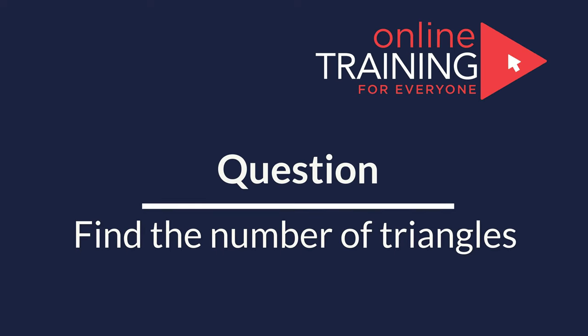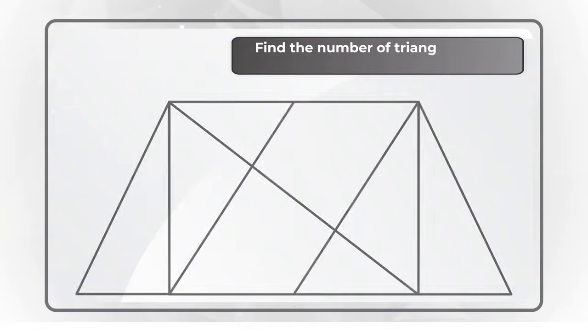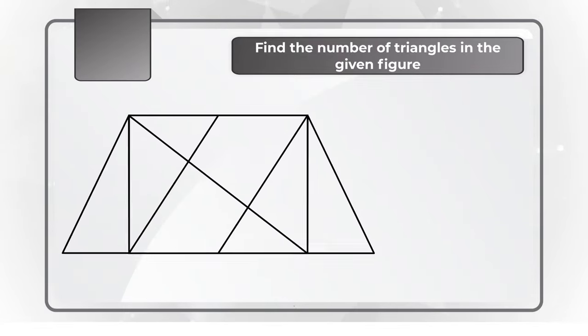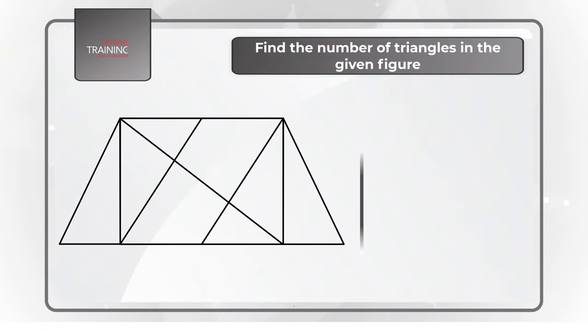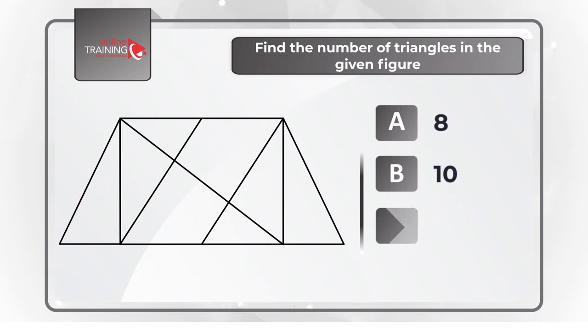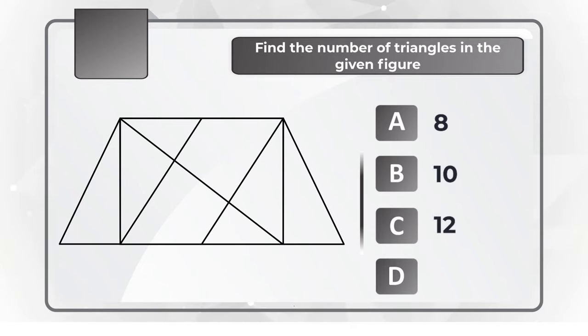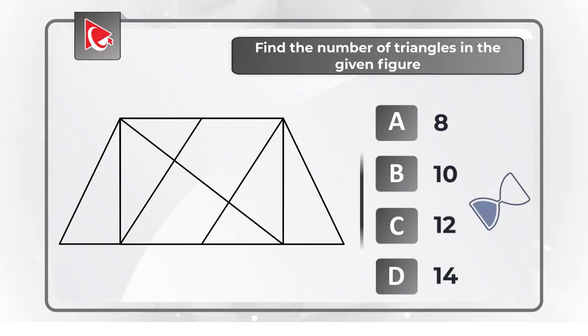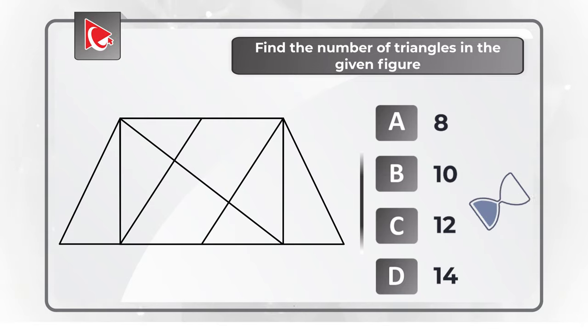Here is a question for you to try your skills. You need to determine how many triangles are shown on the screen. You have four different choices: Choice A, 8; Choice B, 10; Choice C, 12; and Choice D, 14. Feel free to pause this video to calculate the right answer, and make sure to post your solution in comments so I can give you my feedback. Thanks for participating and good luck!